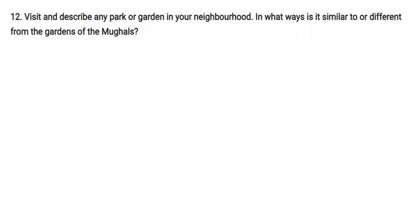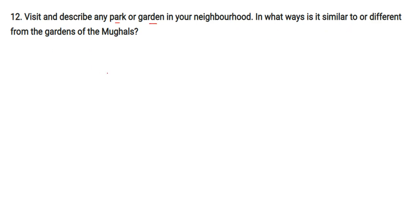Activity: Visit and describe any park or garden in your neighbourhood — in what ways is it similar to or different from the gardens of the Mughals? The Mughal gardens were spread over a very large area, had a large variety of flowers, and were well-decorated and protected. The garden in my neighbourhood is not so large, everyone has easy access, and the flowers are not safe. Therefore, we don't find any real similarity.